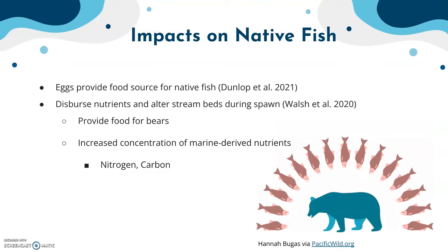While there are obviously very negative effects of Pacific salmon in new environments, they can also have some positive effects depending on how you look at things, which calls into question what their effects might be in the future. As discussed, eggs do provide a food source for native fish, which is positive in terms of provisioning food — but if they're passing on contaminants and diseases, that's quite problematic and can result in fish mortality.